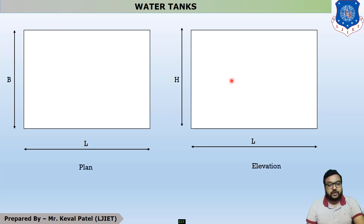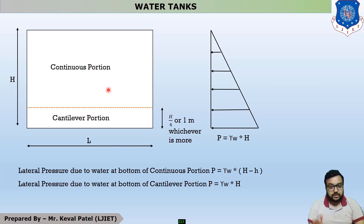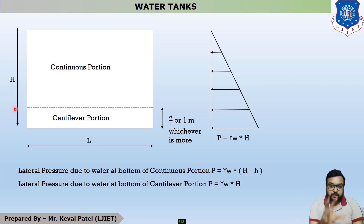In a rectangular water tank, some portion is designed as a continuous portion and some other portion is designed as a cantilever portion. In the elevation, the bottom portion is denoted by small h. This small h has a maximum value of H/4 or 1 meter, where H is the total height of the tank. The maximum of these two values defines the cantilever portion, and the rest is the continuous portion.